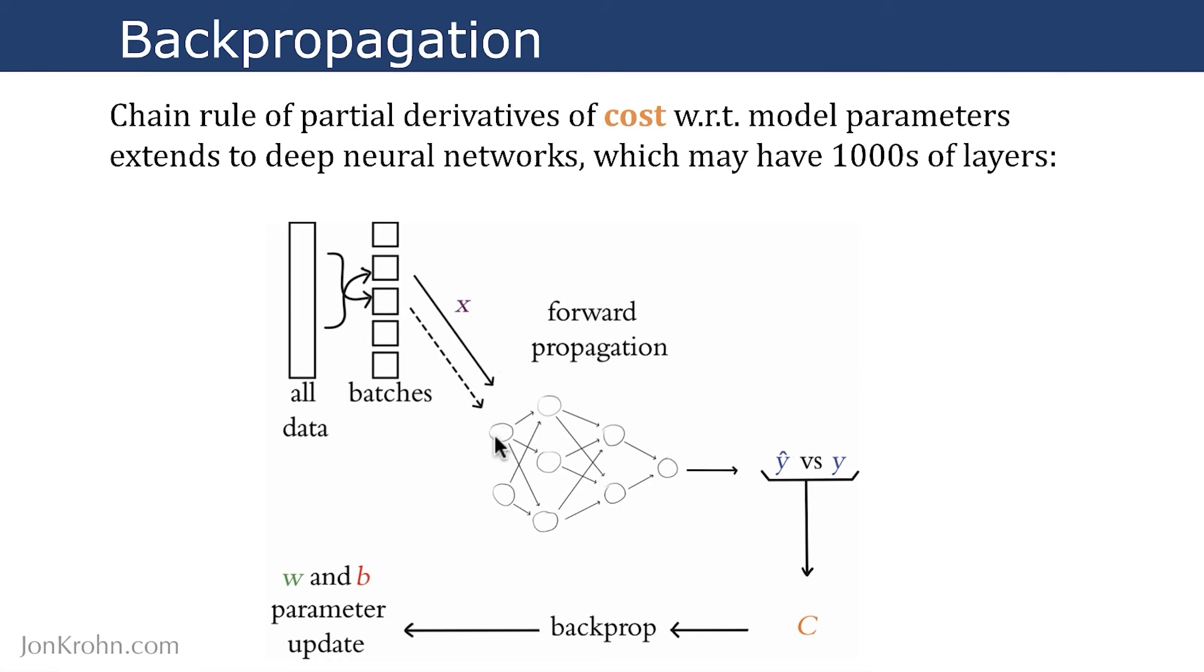Based on our x values, our inputs into the model on the left, through a number of layers of our neural network, where each of these circles is a neuron, each of those neurons has its own parameters. And by the end of the network, we have a y-hat value, an estimate of y pop out.